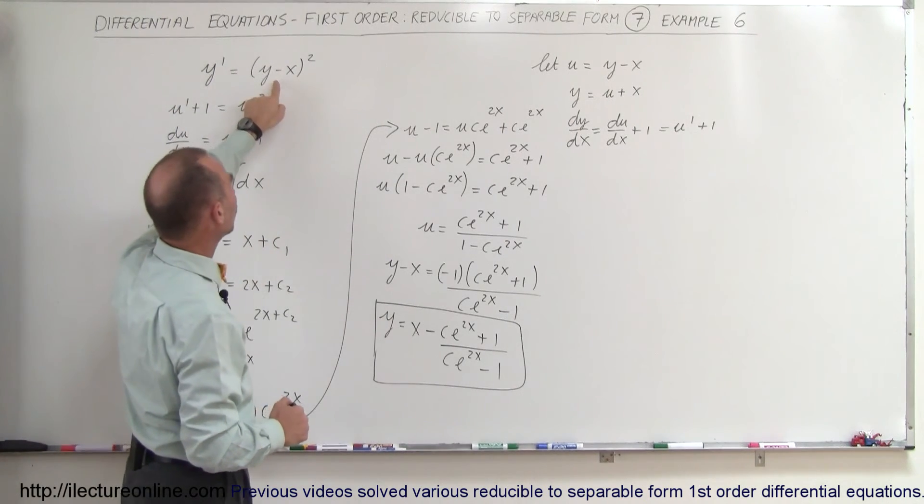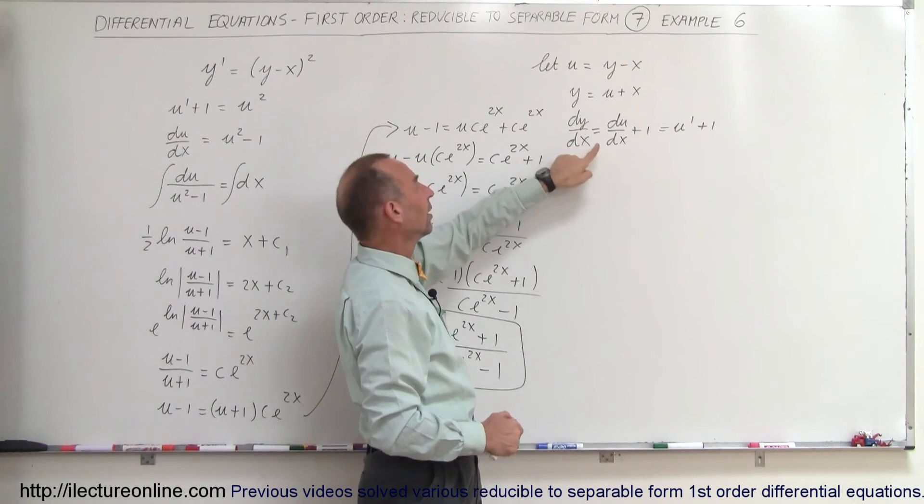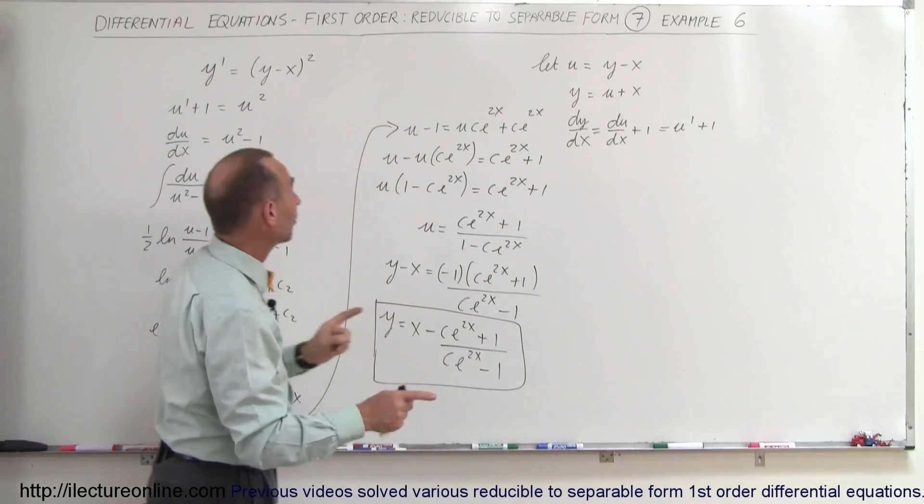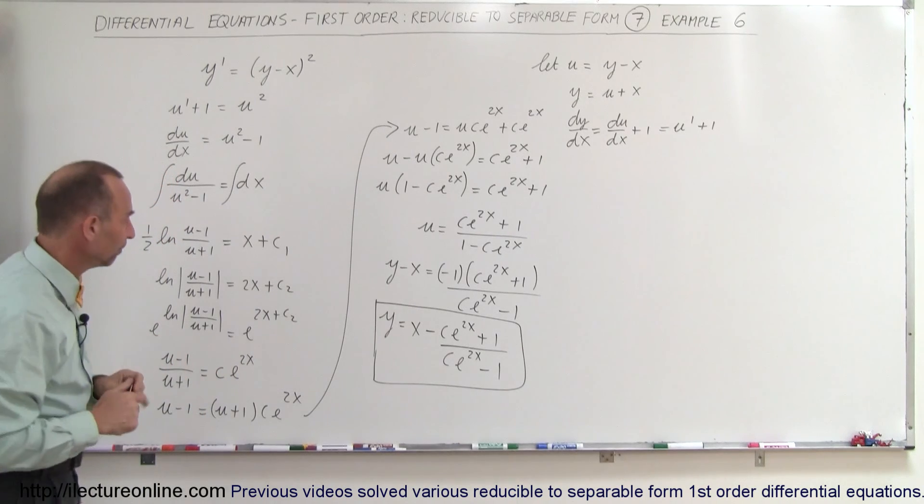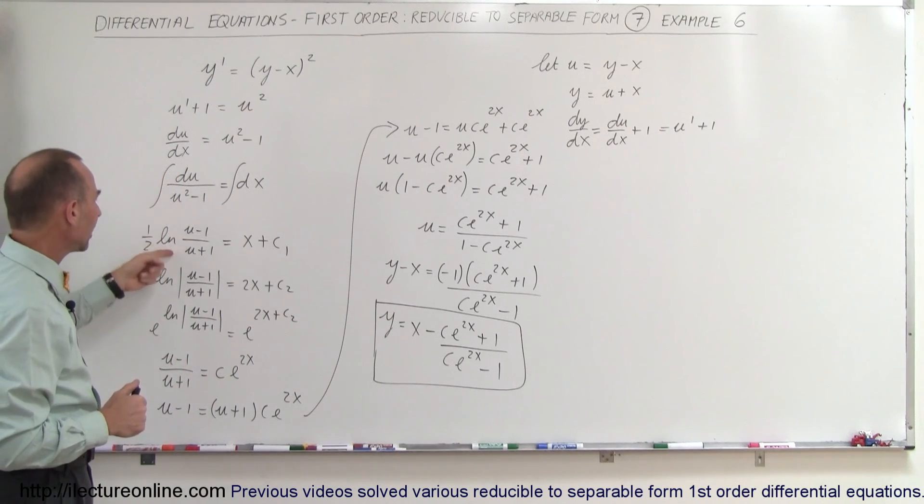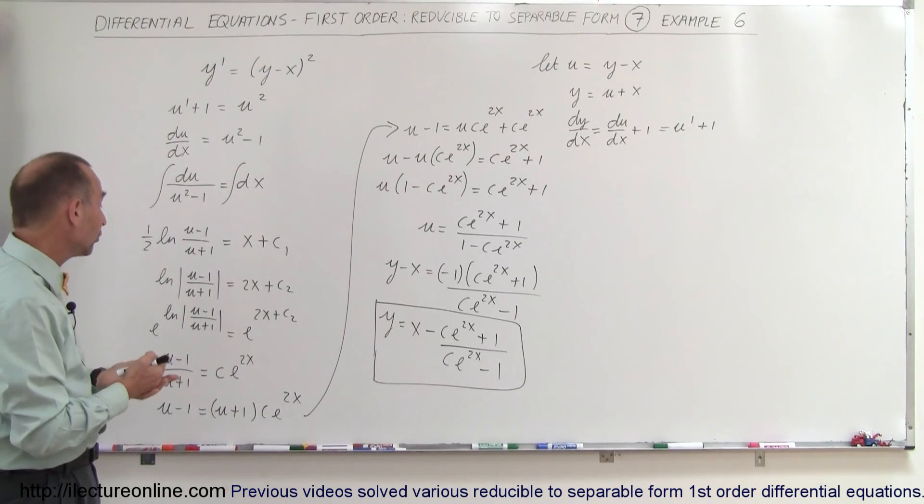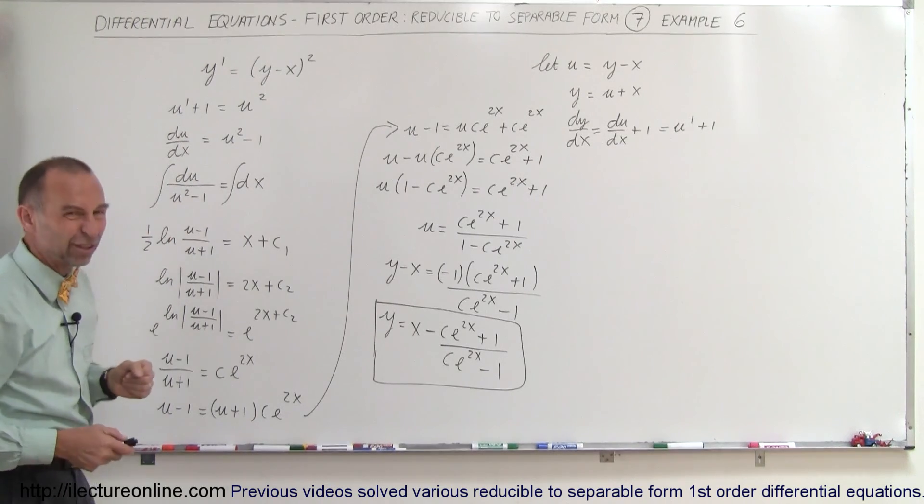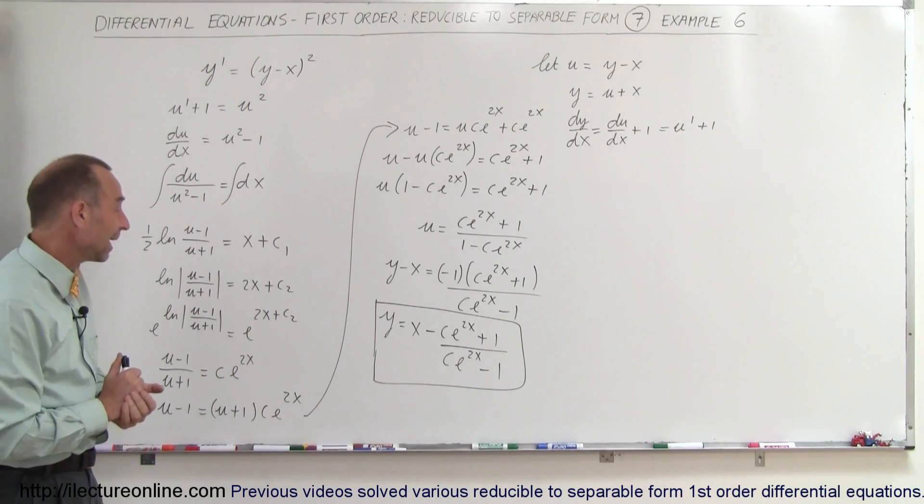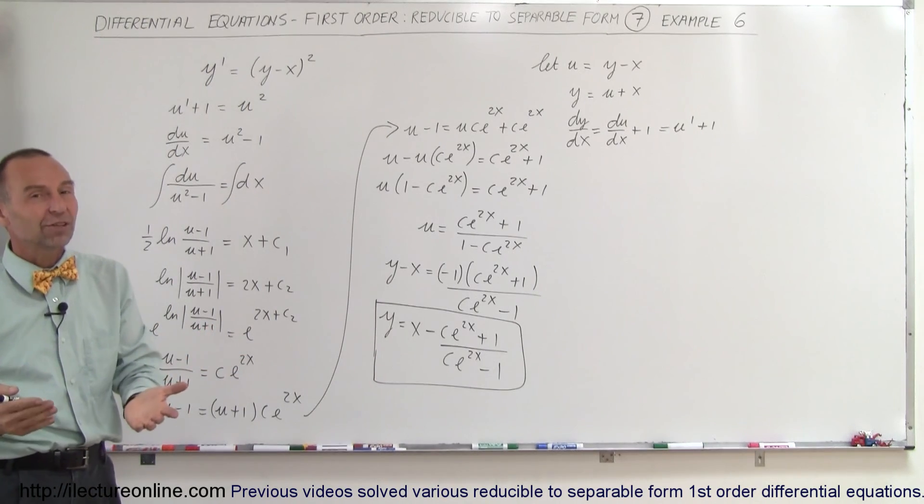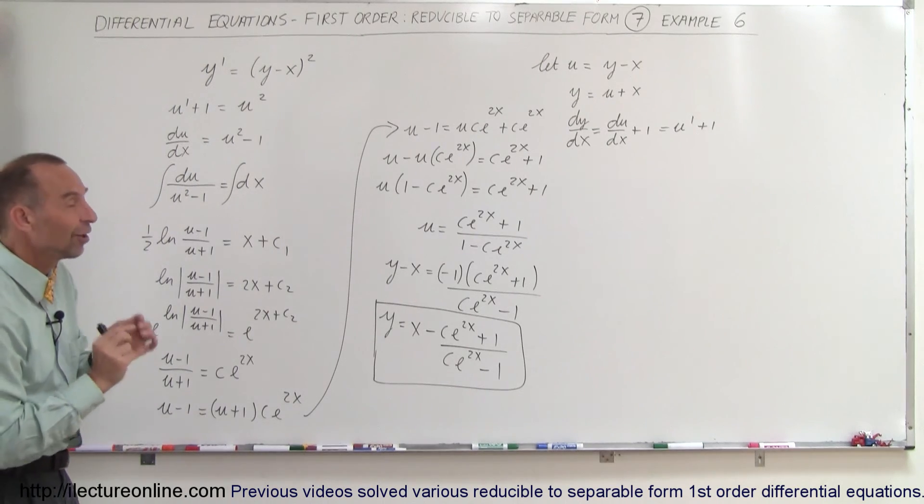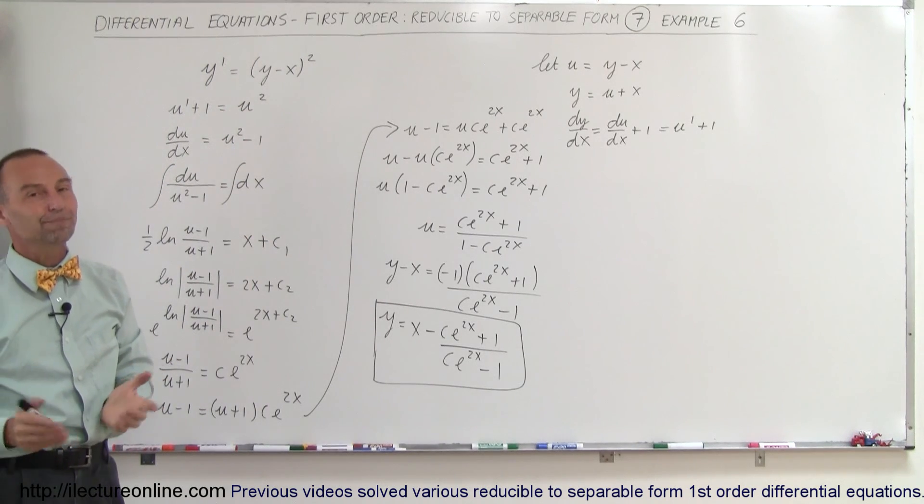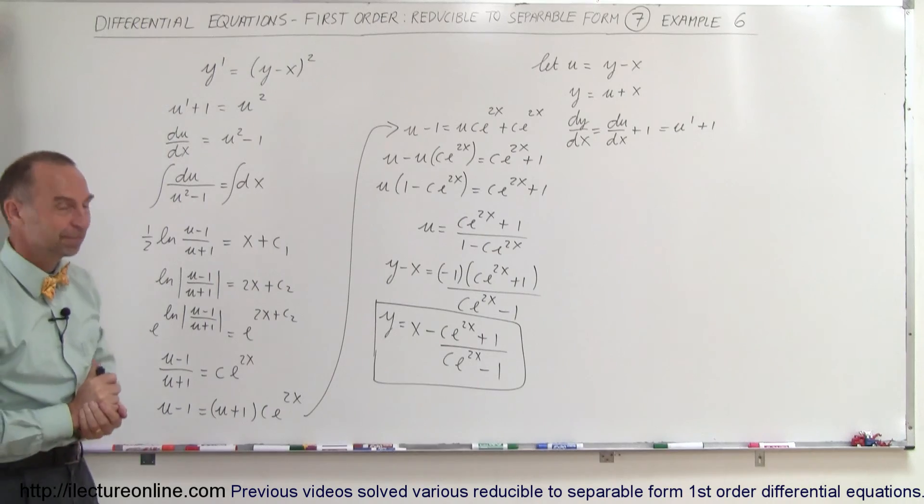That ends up being the solution to this original differential equation. We were able to solve it by making the substitution that y minus x can be written as u, then dy/dx can be written as du/dx plus 1, substitute that back in, and you end up with a form that is indeed separable. Now some of you may say, how do you know that integral? That's something you either memorize, or you can take the derivative of this and see if you end up back with the original equation. But anyway, that's how you do a problem like this. Some good examples of how to solve first-order differential equations using the technique of separation of variables, but first you need to make the necessary substitution, and that's how it's done. Thank you.